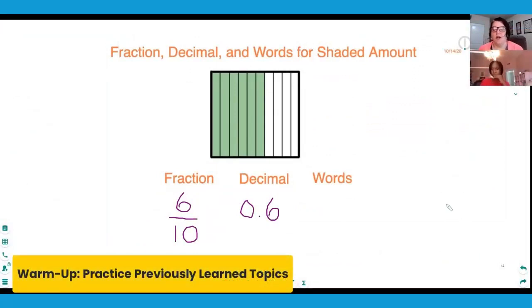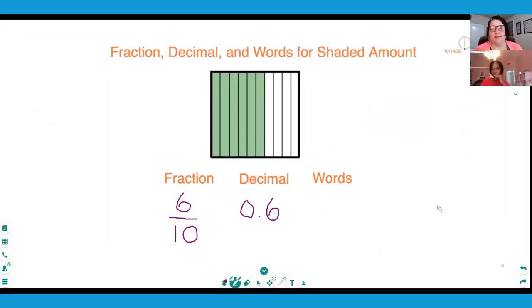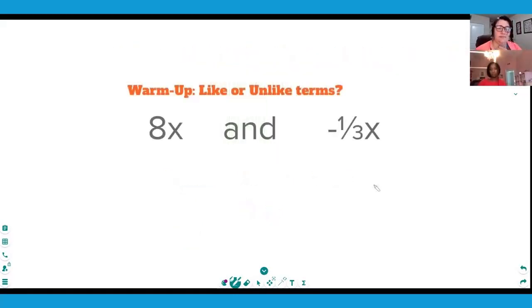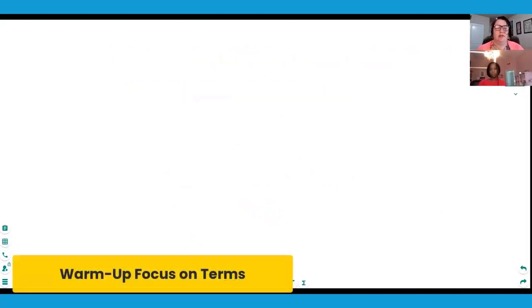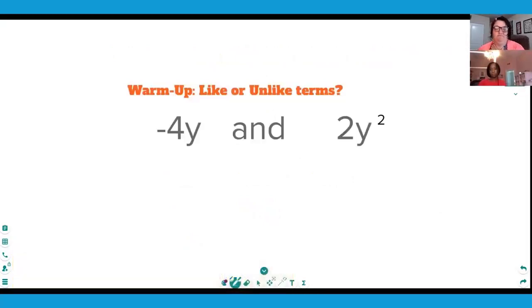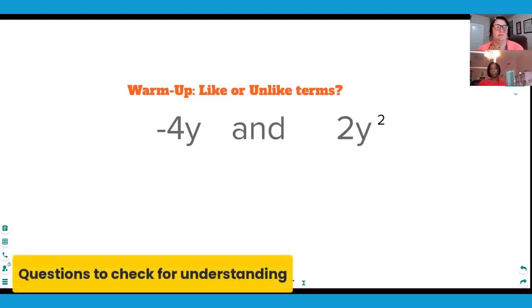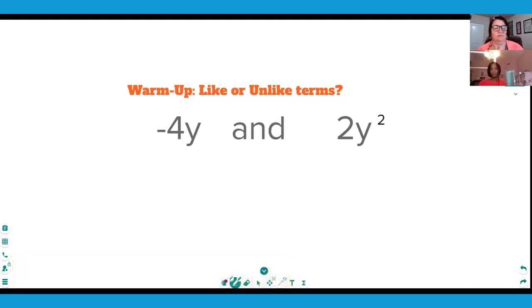How would you read the decimal mathematically? Point six tenths. They're like terms, very good. They both have the same variable. And these ones are unlike. Why are they unlike? Because there's an exponent on one and not on the other. Very good, exponent makes a huge difference.